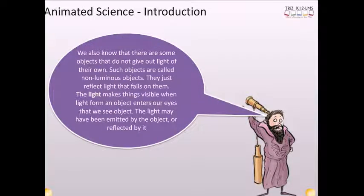We also know that there are some objects that do not give out light of their own. Such objects are called non-luminous objects. They just reflect light that falls on them. The light makes things visible when light from an object enters our eye. The light may have been emitted by the object or reflected by it.